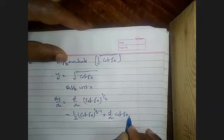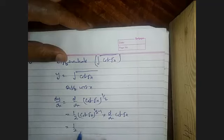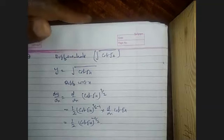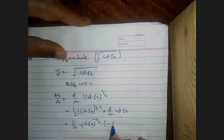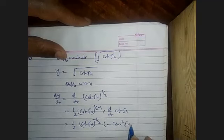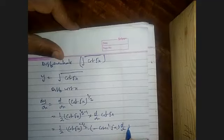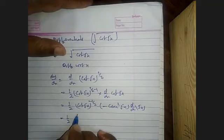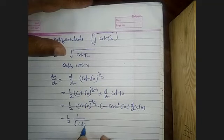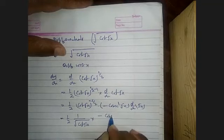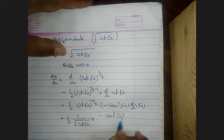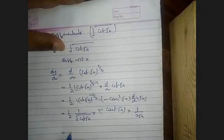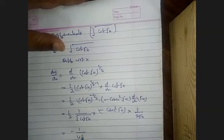By chain rule, derivative of cot(√x): that gives 1/2 · (cot(√x))^(−1/2) · (−cosec²(√x)), into by chain rule the derivative of √x, which gives 1/(2√x).